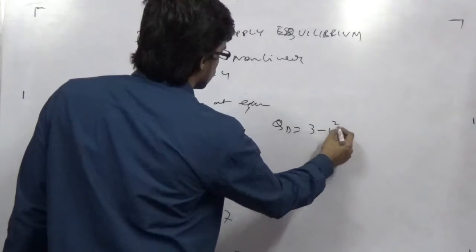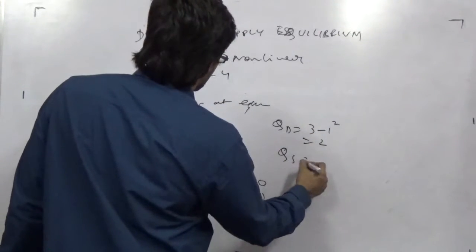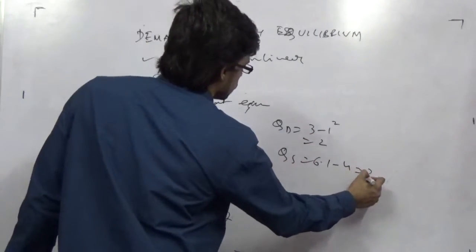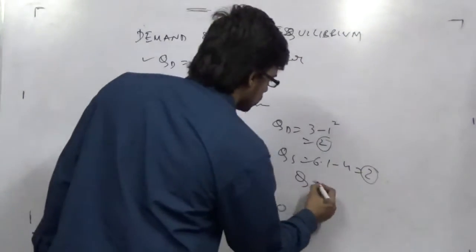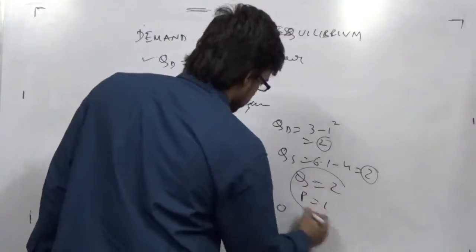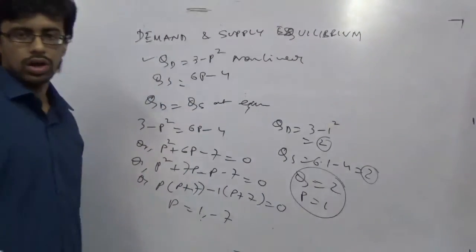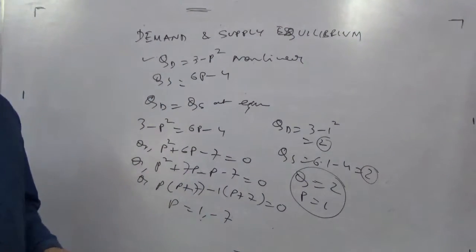qd equals 3 minus 1 square, that is 2. Or qs of also 6 into 1 minus 4, that is 2. In both cases, you will get 2. The answer is q equals 2 and p equals 1 in case of a non-linear demand curve. That's all about the equilibrium structure.